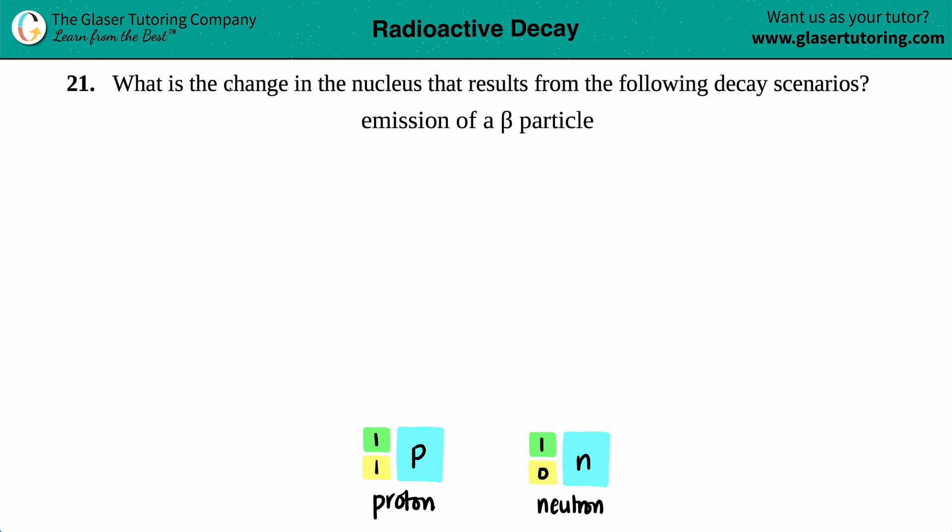Number 21. What is the change in the nucleus that results from the following decay scenarios? And then we have an emission of a beta particle.